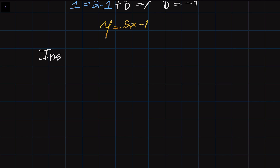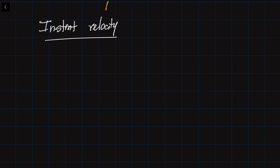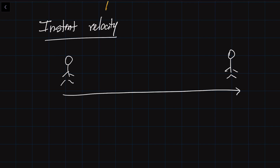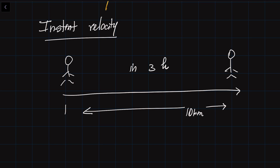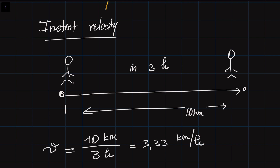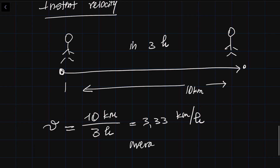Another problem I would like to solve is the problem of instant velocity. I'll start with the concept of average velocity. Let's say you walk 10 kilometers in 3 hours. The average velocity between these two points is found by dividing the distance by the time elapsed: 10 kilometers divided by 3 hours gives 3.33 kilometers per hour. That's your average velocity.